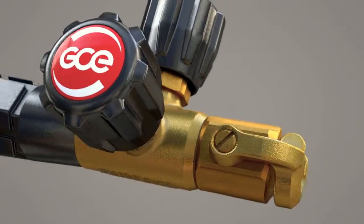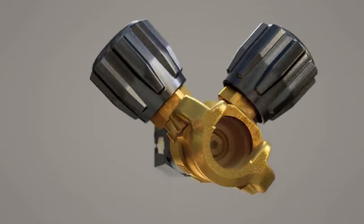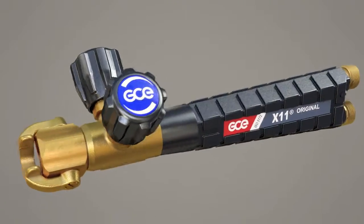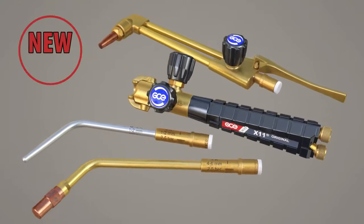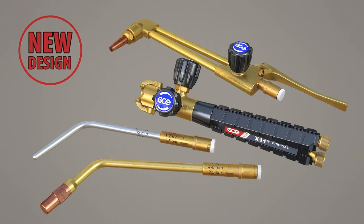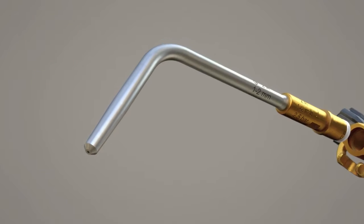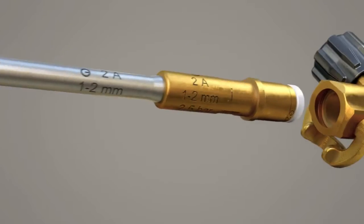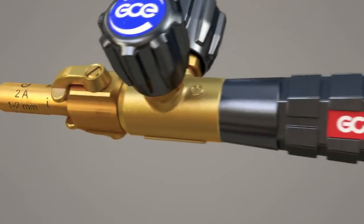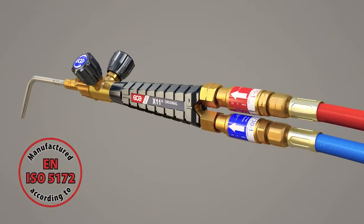The GCE X11 original combi torch is a complete system for cutting, welding, heating, and soldering. The welding nozzles are specially designed and calibrated, and the quick connector makes it easy to connect to the shank.